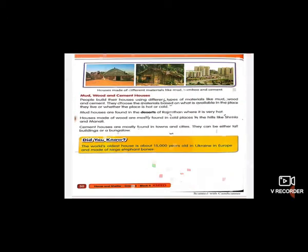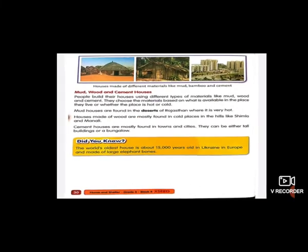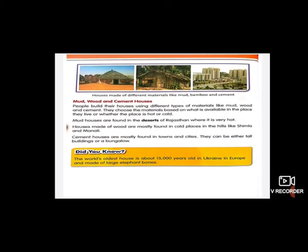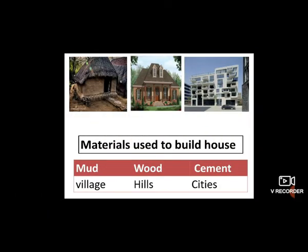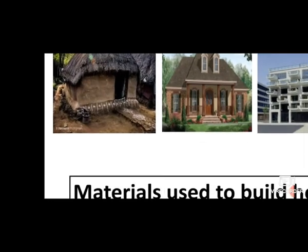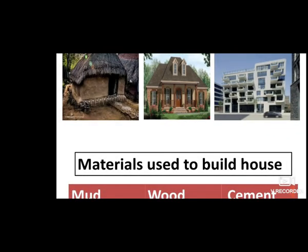Look at these pictures. From your content book, there are three kinds of houses — made of wood, mud, and cement. They all are made using different materials, so they look different. Mud houses are mostly seen in villages. These types of houses are found in places like Rajasthan, where it is very hot, because mud houses are cool from inside.